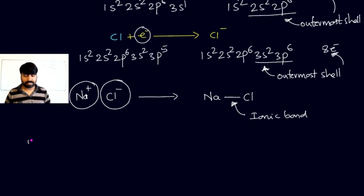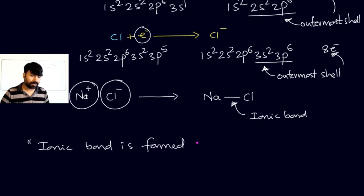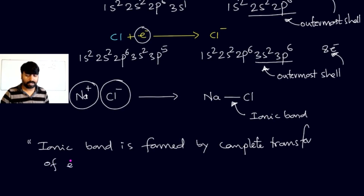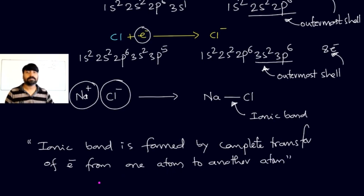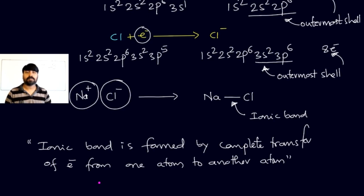The ionic bond is formed by the complete transfer of electrons from one atom to another atom. In sodium chloride, the electron from sodium is transferred to chlorine, forming Na⁺ and Cl⁻, which bond via electrostatic force of attraction. The number of electrons transferred depends on how many electrons are needed to complete the octet.